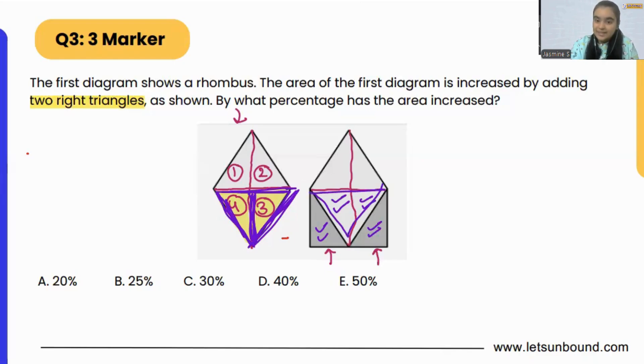Now if the complete area is 100 percent, half of 100 percent will be 50 percent correct. So the area has been increased by 50 percent.